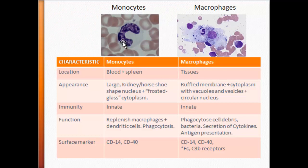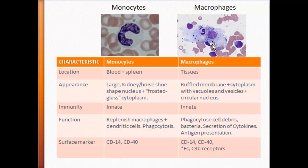The monocyte has a thick kidney-shaped, horseshoe-shaped nucleus and frosted cytoplasm. Whereas our macrophage — we'll get a bigger picture in the next slide — but for now, bear in mind that its membrane is ruffled. It has a cytoplasm with vacuoles and vesicles, and it has a circular nucleus. So it goes from a kidney-horseshoe shape to a circular nucleus. Both of these cells are part of our innate immune response.